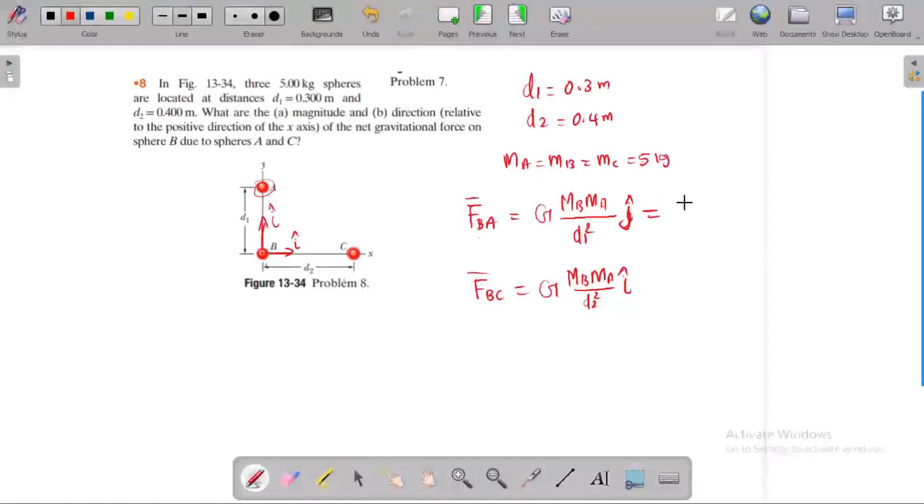Substitute the values. What is the value of G? 6.64 times 10^-11. Mass A and B is 5 times 5 equals 25. d1 is 0.3 squared equals 0.09.